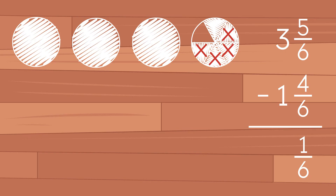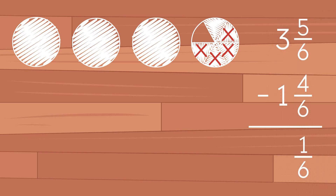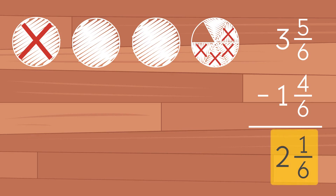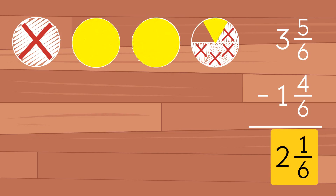Next, we subtract the whole number parts. 3 minus 1 gives us 2. So the final answer is 2 and 1 sixth.